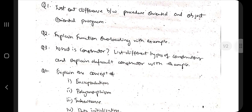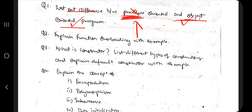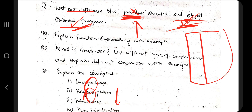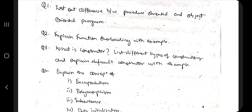The first question is: list out the differences between procedure-oriented and object-oriented programming. The main difference is that procedure-oriented programming doesn't have classes — it has only functions. Object-oriented programming has classes as well as data members and functions embedded together. It includes OOP concepts like encapsulation, polymorphism, inheritance, and abstraction. It can also implement real-life applications. For more details, watch the theory video where each key point is explained in depth.